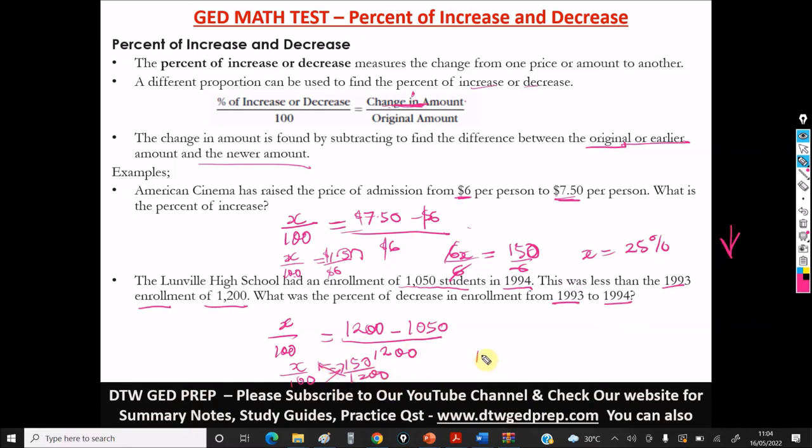So, this times this will give us 1,200X equal to 100 times 150. That will give us 15,000. Just add the two zeros here. Then let's get X by dividing both sides by 1,200. These two zeros will cancel these two zeros. So we're left with 150 over 12 here.